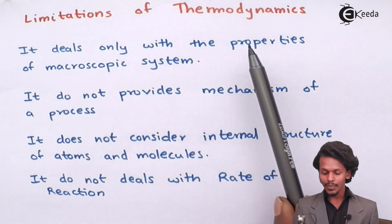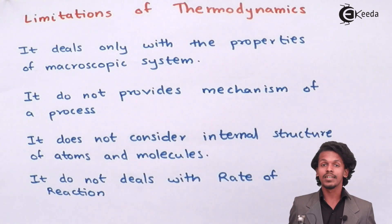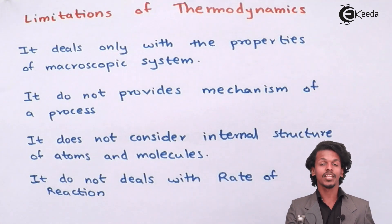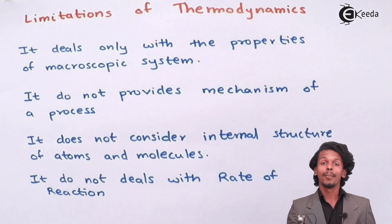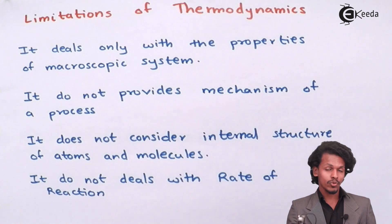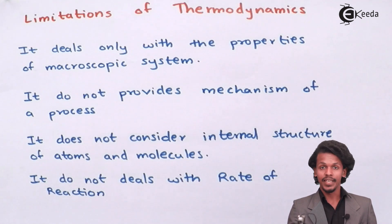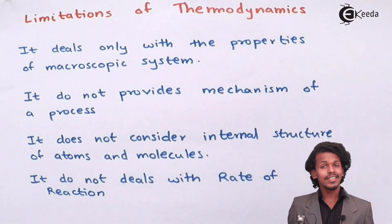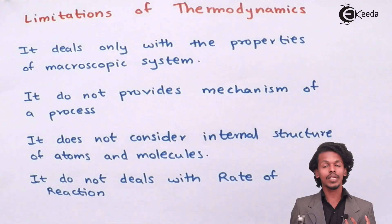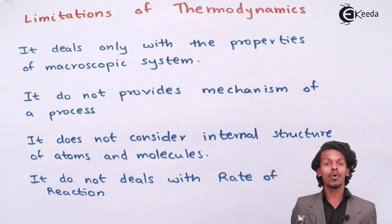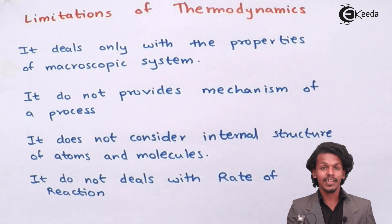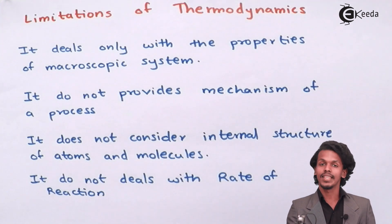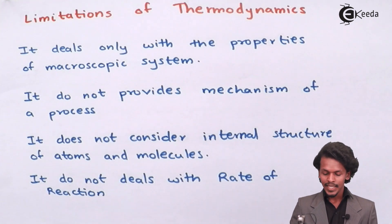The first drawback is that chemical thermodynamics deals only with the properties of macroscopic systems, not microscopic systems. The microscopic system might involve atomic structure or substances present in very small amounts. Chemical thermodynamics requires chemicals to be involved in very large amounts, so it cannot address microscopic-level properties.